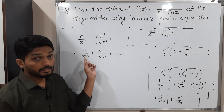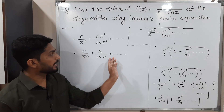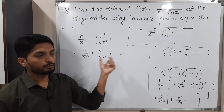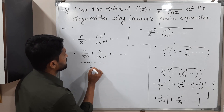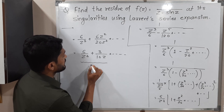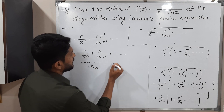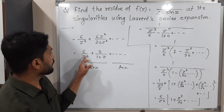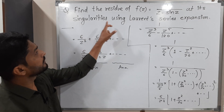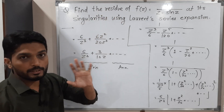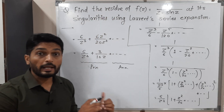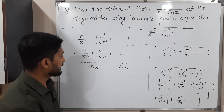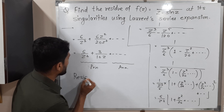We can see the power of z is reducing in the denominator: z³, then z. Terms with z in the denominator form the principal part, while terms with z in the numerator form the analytic part. Since there are terms up to 1/z³, this is a pole of order 3.